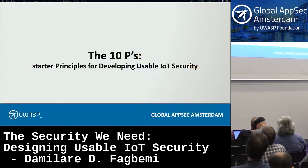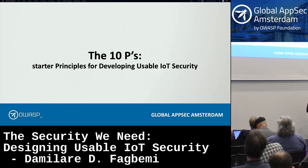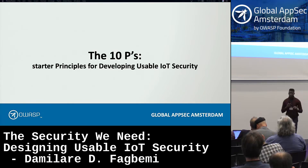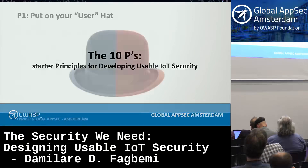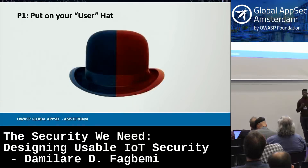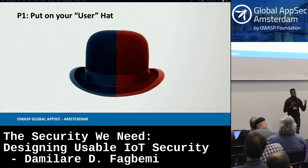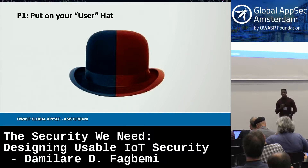This takes us into what I call the 10 P's — principles for usable secure design in IoT. The first principle is to put on the user hat, which means remembering everything we just discussed — for instance, that security is perhaps not the most important thing for the user of this product.